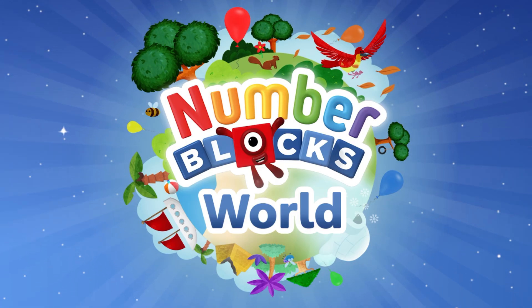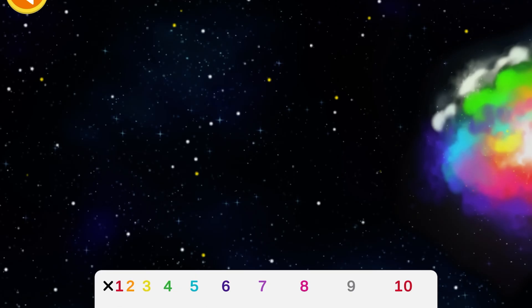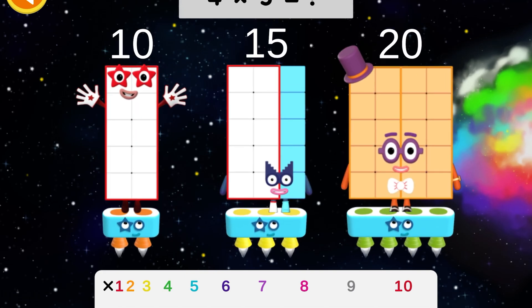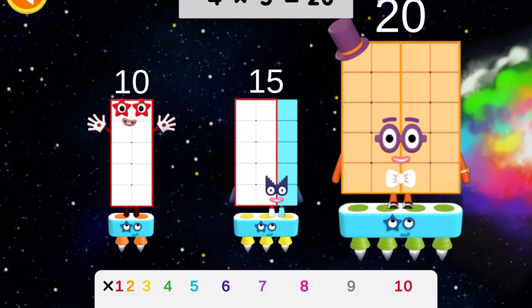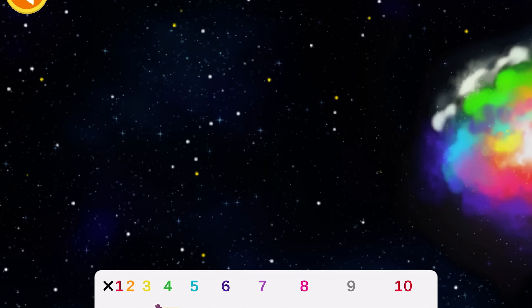Can you complete the five times table? 4 times 5 equals 20.